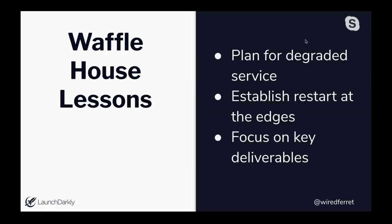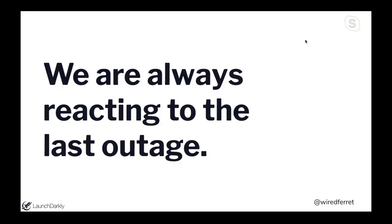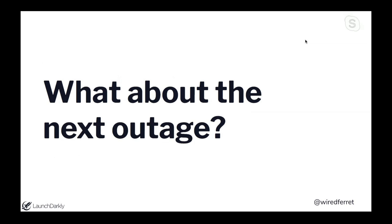What have we learned from Waffle House? They have a plan for degraded service. They establish the restart at the edges based on how close they can get to the storm margins without endangering anyone. They focus on key deliverables — feeding people. We're always reacting to the last outage, not the next bad thing. We need to think about where our vulnerable places are so we can start doing mitigation and prep at the edges. Because perfection, although a noble goal, is not something that actually happens in the world.